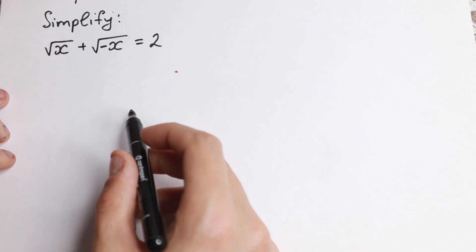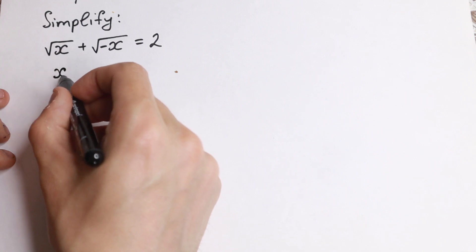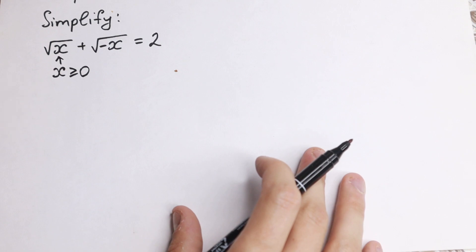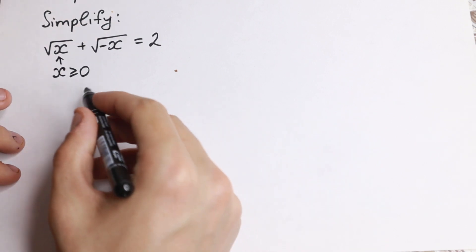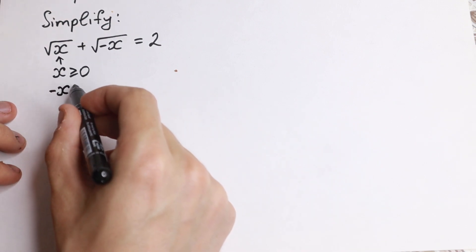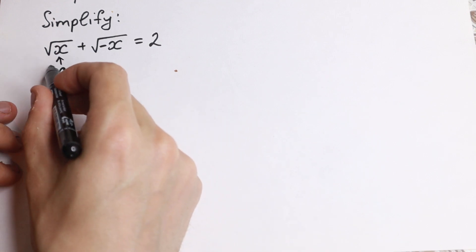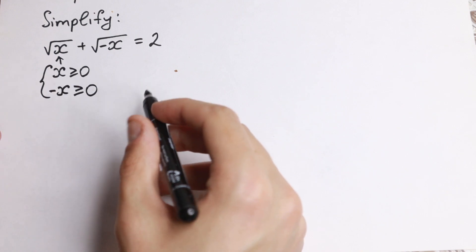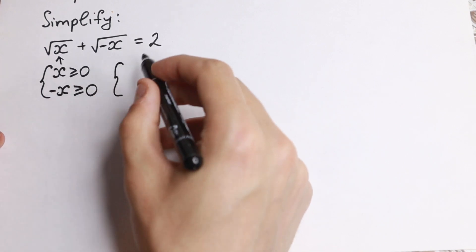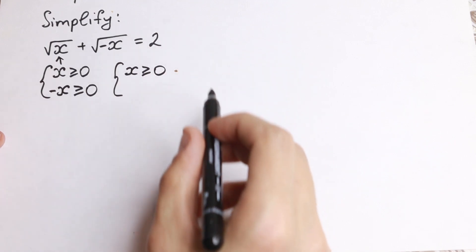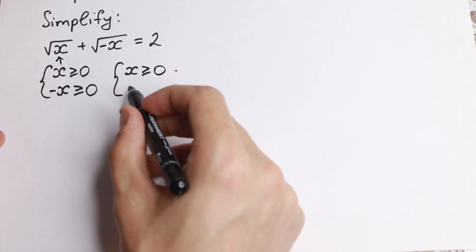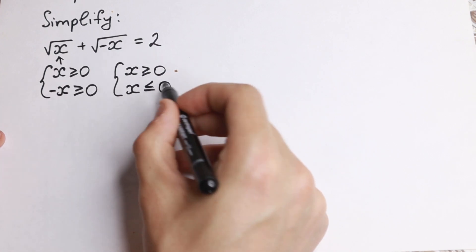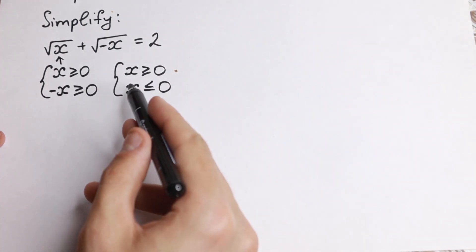Let's look at x. We know that x needs to be greater than or equal to zero — that's our first inequality. But here we have minus x inside the square root, so minus x also needs to be positive. We have a system of inequalities. Multiplying the second inequality by minus one and flipping the sign gives us: x ≥ 0 and x ≤ 0.